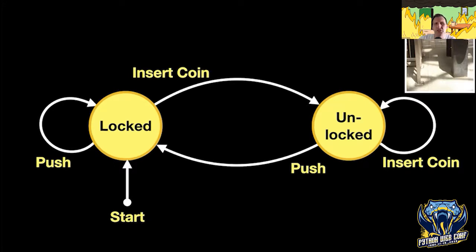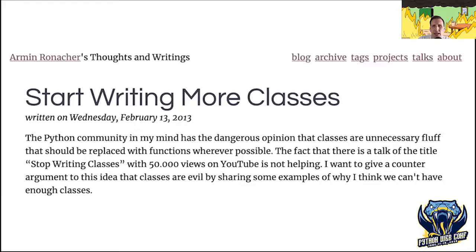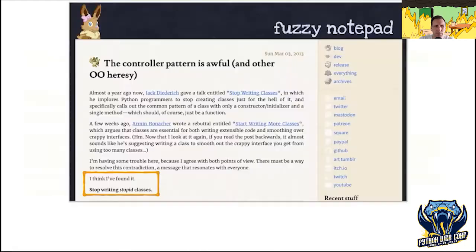I hope I've established that abstractions are good for you. What do all these examples have in common? They use classes. Python's relationship with classes is somewhat strained. You may have seen Jack Diederich's seminal 2012 talk where he urged us to stop writing classes — but he really meant classes with only one method. Armin Ronacher later told us to start writing more classes. Eventually Hettinger summed it up by saying to stop writing stupid classes — so it turns out both were right.